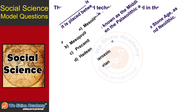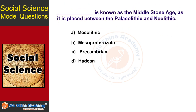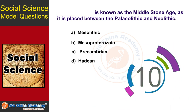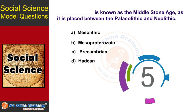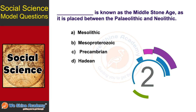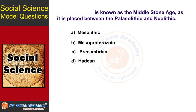The next question is: which period is known as the Middle Stone Age, as it falls between the Paleolithic and Neolithic? You have 10 seconds to find out. The answer is Option A, Mesolithic.